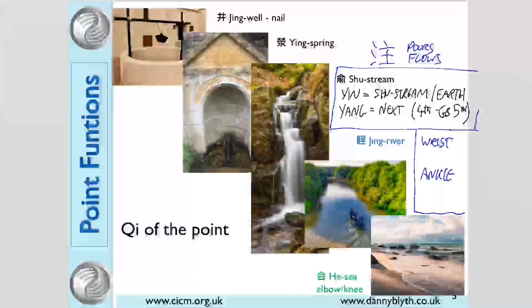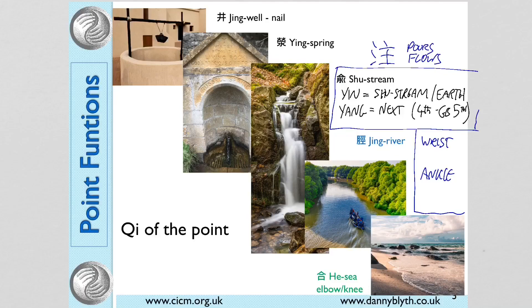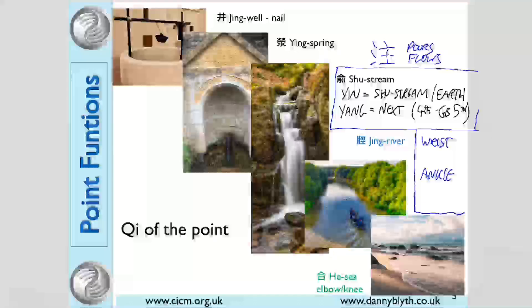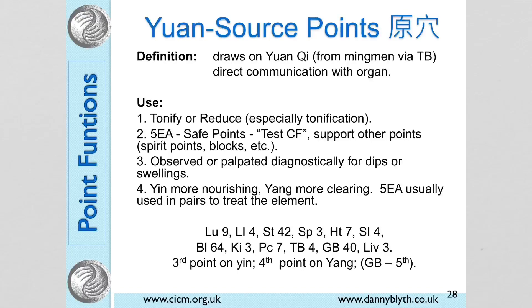These points are found at the wrist and the ankle. This is where the Qi is distal enough to be still very dynamic but proximal enough that it's starting to flow in a direction, so they are easily accessed.